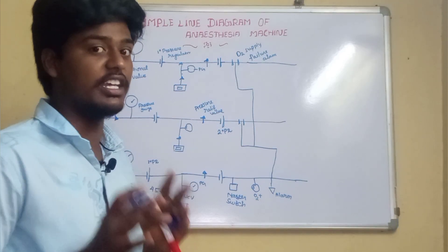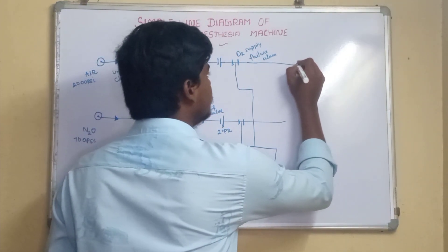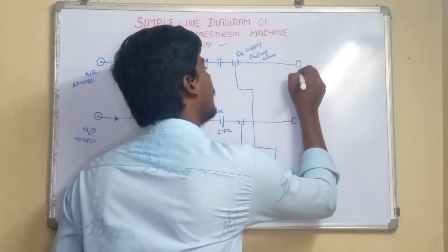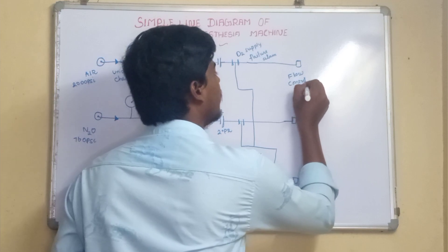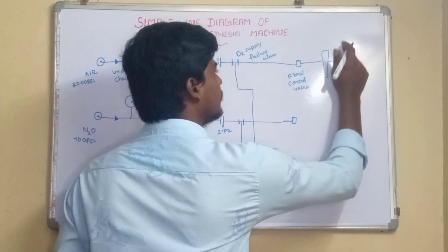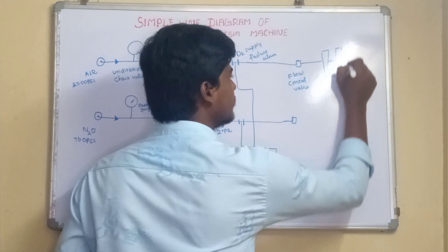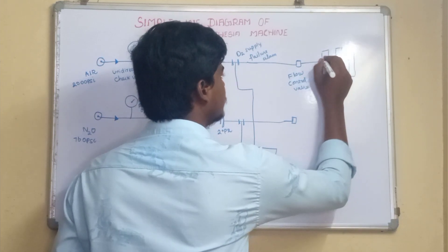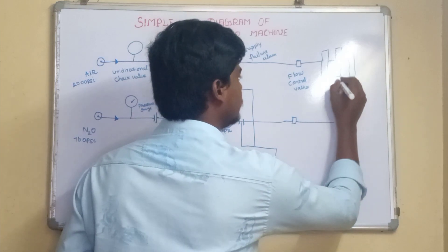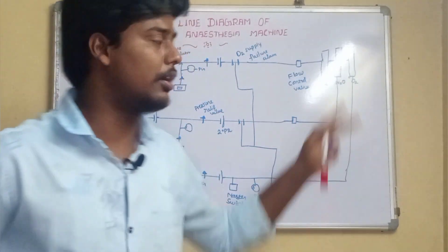The master switch and oxygen flush are independent parts of the anesthesia machine. After these, there is a flow control valve present in the air line and the other gas lines. After the flow control valve, there are flow meter assemblies: the air flow meter, the nitrous oxide flow meter, and the oxygen flow meter.